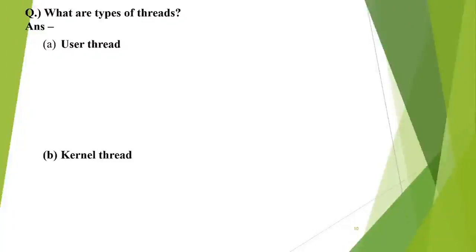Let us continue with the next question: in case of threads, what are the various types of threads? Basically, types of threads are divided based on the criteria of whether the thread is created with the support of the operating system, or there is a separate library in the system designed to support it at the user level, or it is supported by the operating system kernel.